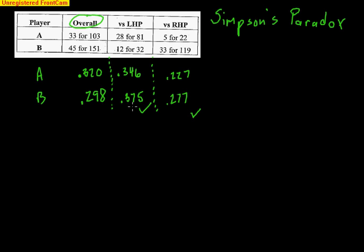Against left-handed pitchers, they're both pretty good. But A has a lot of his pitches coming from left-handers — 81 out of 103 is a pretty big bulk of the pitches. They're both really good against left-handers, and A has a lot against left-handers, so that's weighting A's overall average up. They're both poor against right-handed pitchers, but B faces more right-handed pitchers over 151 at-bats, so that low value is weighting his average lower, causing that average of 0.298 to go down, whereas A's is going up to 0.320.